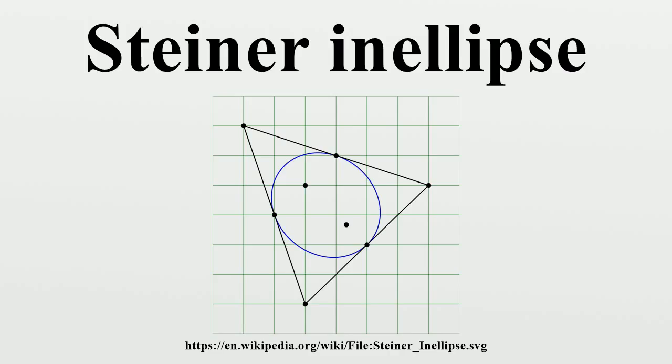The equation of the Steiner ellipse in trilinear coordinates for a triangle with side lengths a, b, c. As properties, the center of a triangle's Steiner ellipse is the triangle's centroid, the intersection of the triangle's medians.